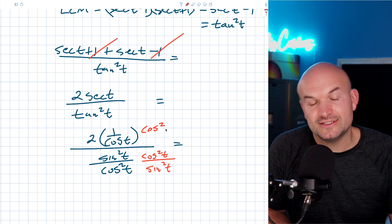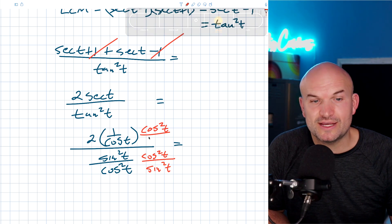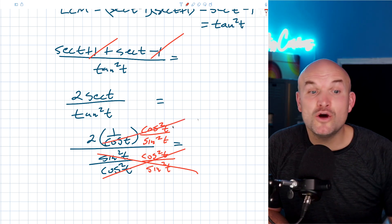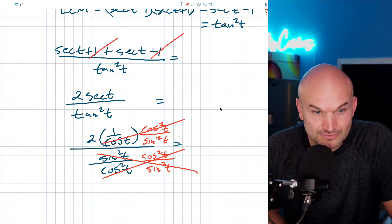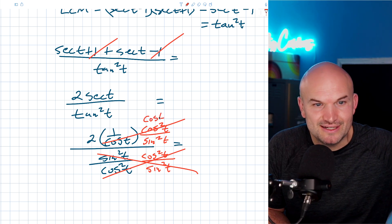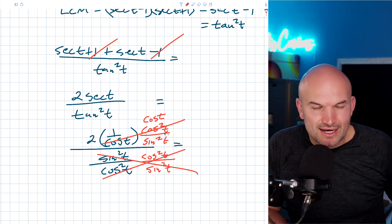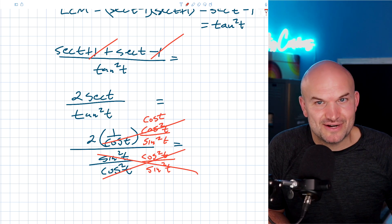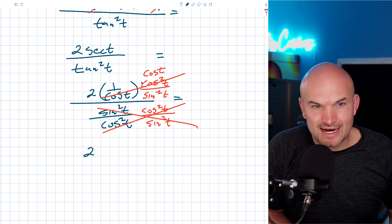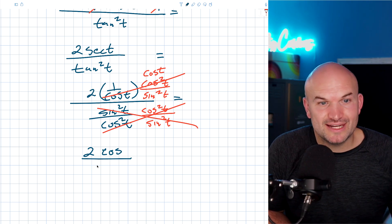I'm going to do that in the denominator as well as in the numerator. The cosine squared of t terms are going to divide out. That's going to leave me one cosine of t that divides out, but I'm still going to have one more cosine of t. So I still have two cosine of t all over sine squared of t.